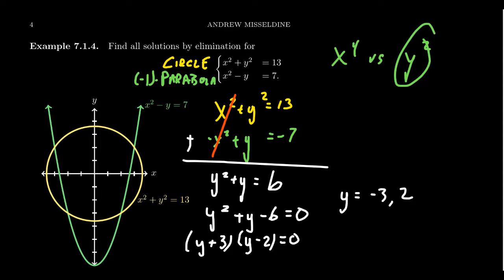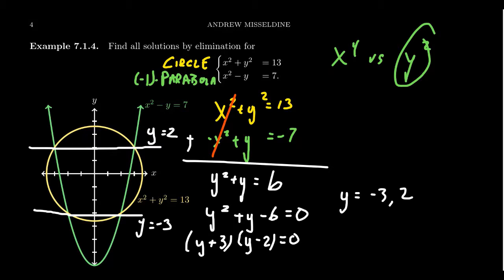So with our two y-coordinates, that does seem to work with the graph — there's a horizontal line at y = -3 and one at y = 2. We're going to get four solutions total, because as we plug in y = -3 and y = 2, we'll get two possibilities each time. We'll plug into one of the two equations — it doesn't matter which.